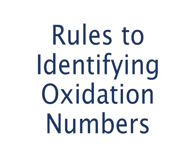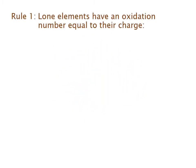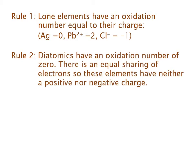Rules to identify oxidation numbers. Rule one: lone elements have an oxidation number equal to their charge. So if we have just Ag, the oxidation number is zero. If I've got Pb²⁺, lead's oxidation number is plus two. And if I have Cl⁻, then chlorine's oxidation number is minus one. Rule two: diatomics have an oxidation number of zero. There is an equal sharing of electrons, so these elements have neither a positive nor negative charge. Diatomics, when in their diatomic state, have an oxidation number of zero.